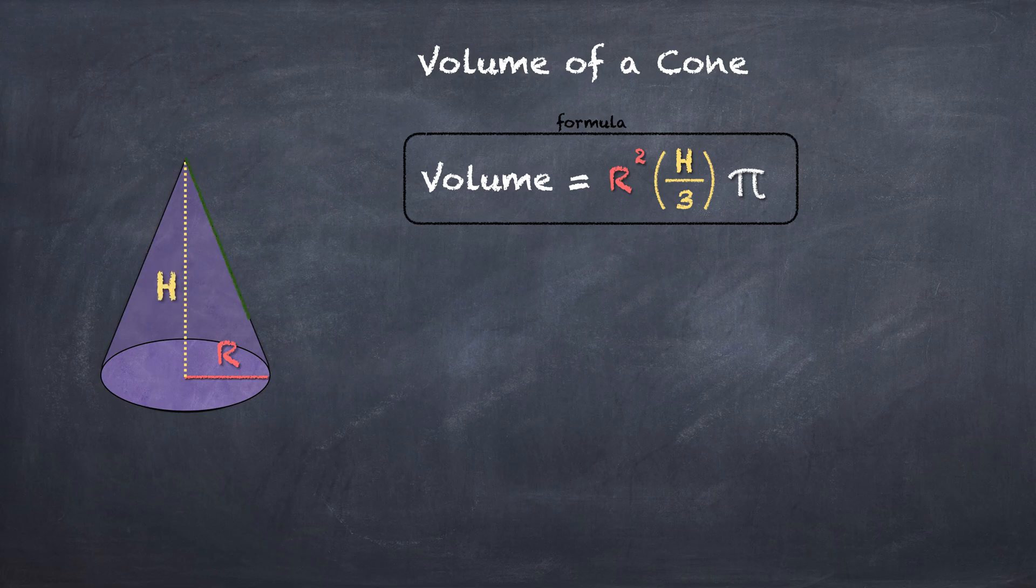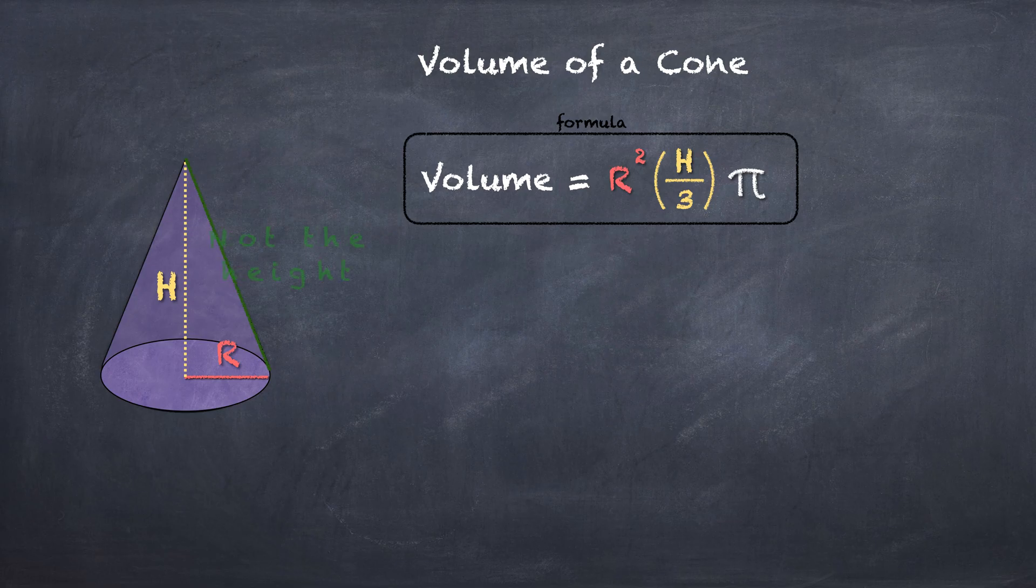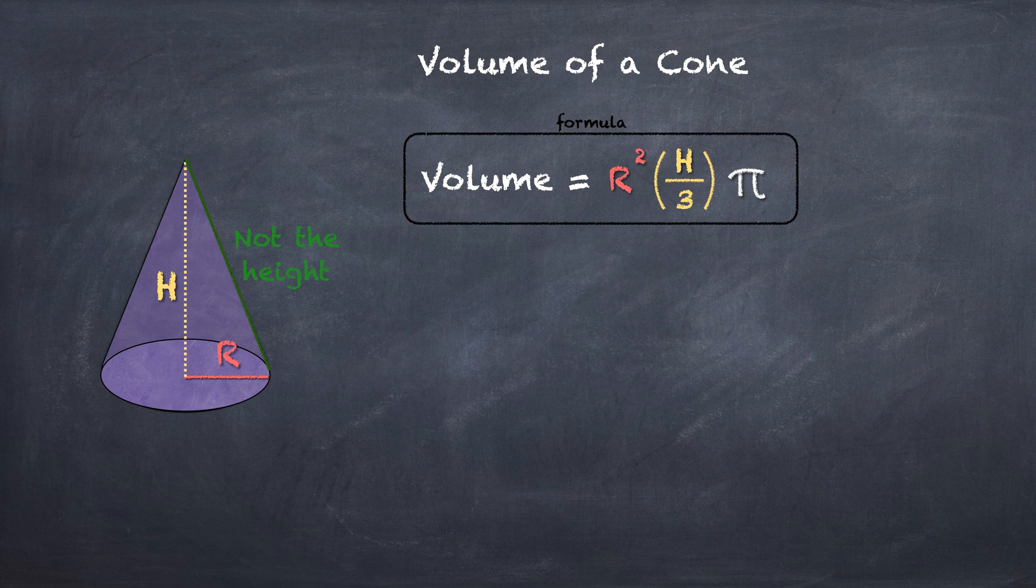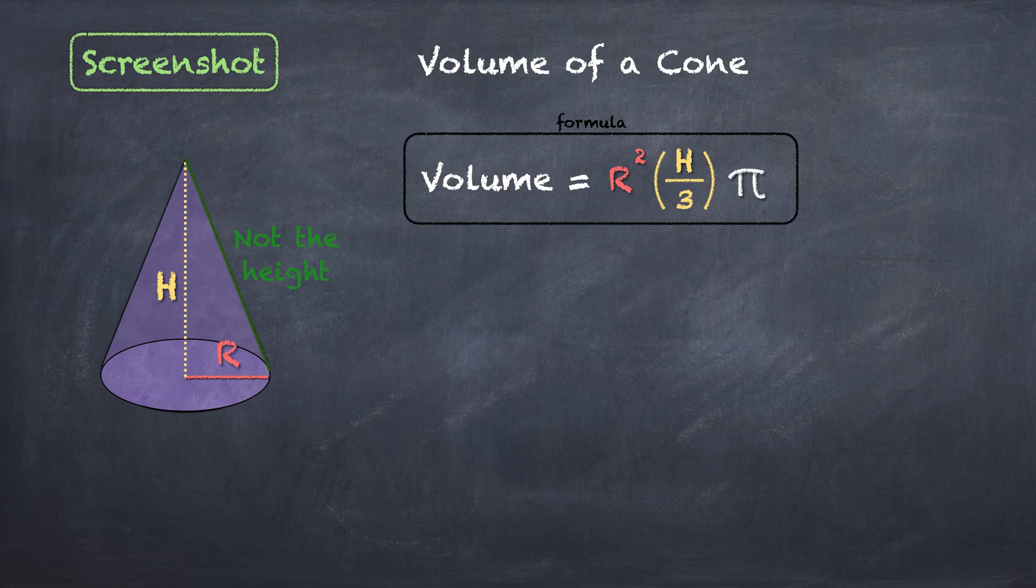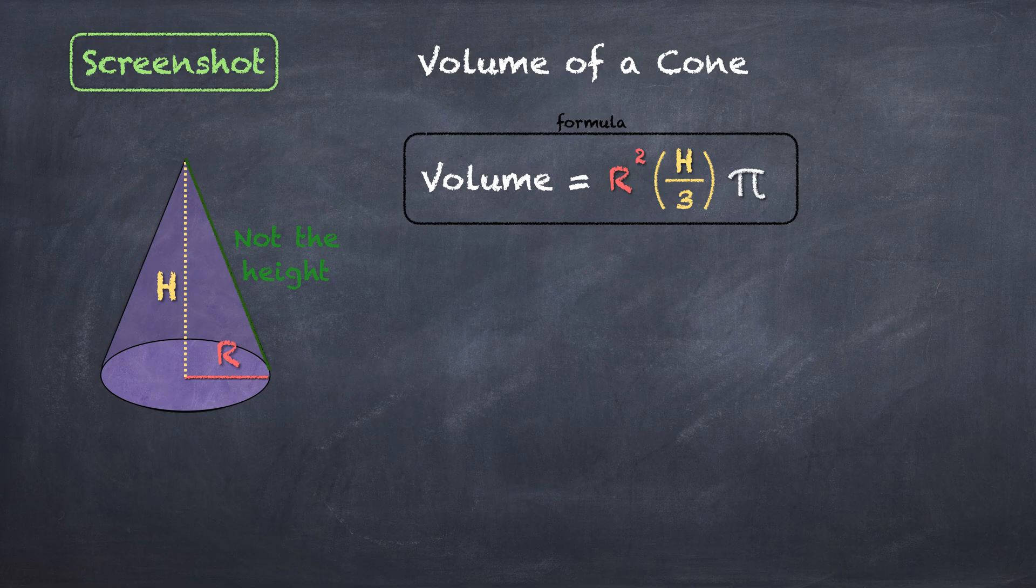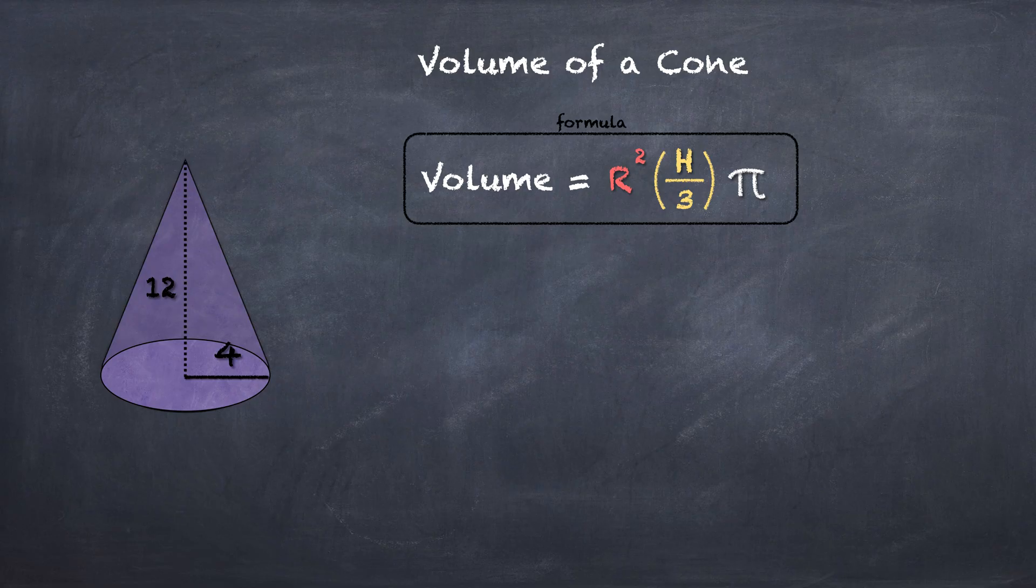The hypotenuse or side of the cone, that is not the height. Some people get confused by that. That side length of the cone is not the height. Height is from the radius to the very top of the cone. Go ahead and screenshot that for your notes if you'd like.